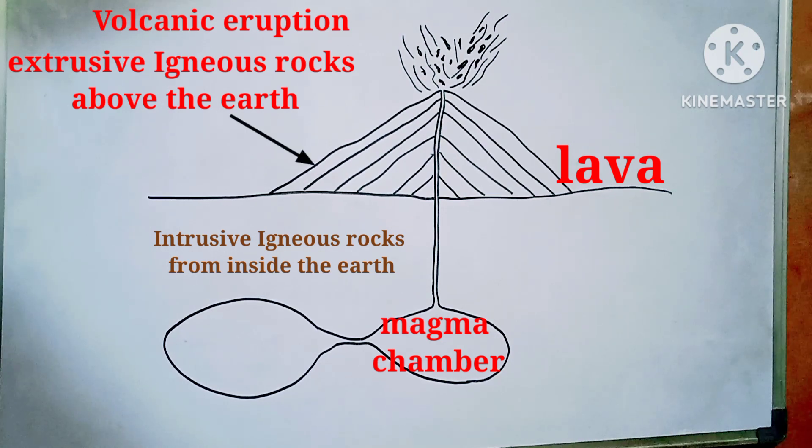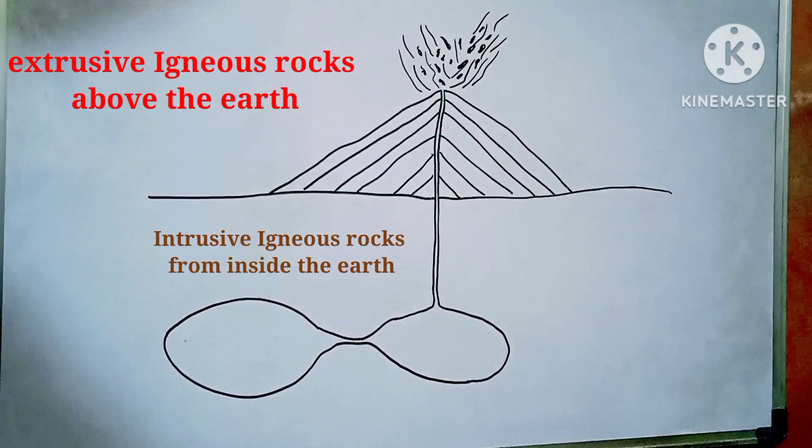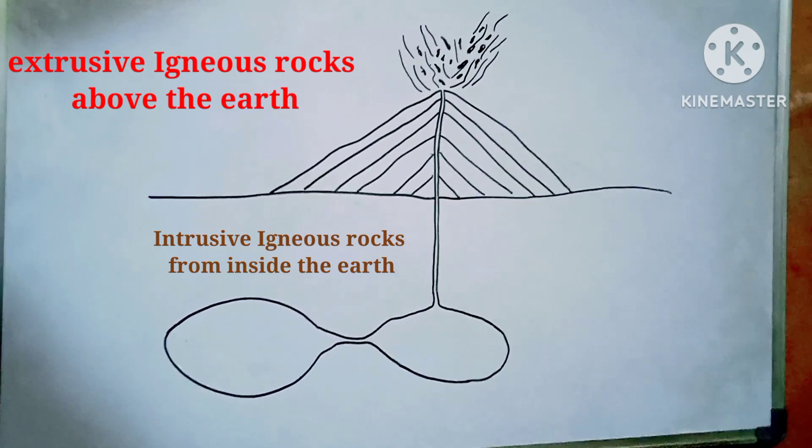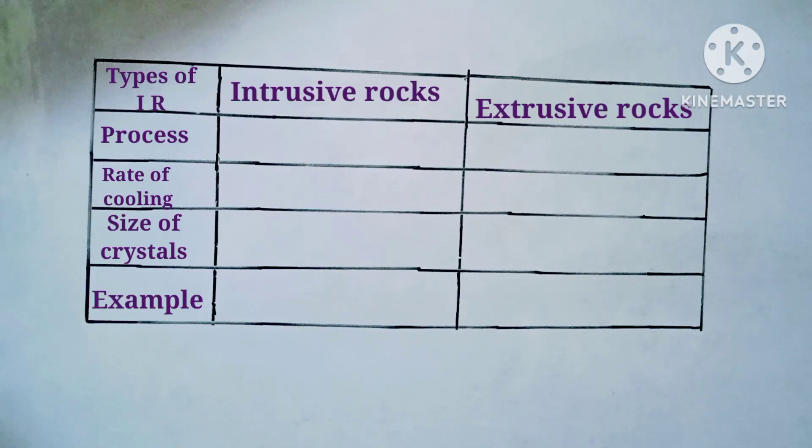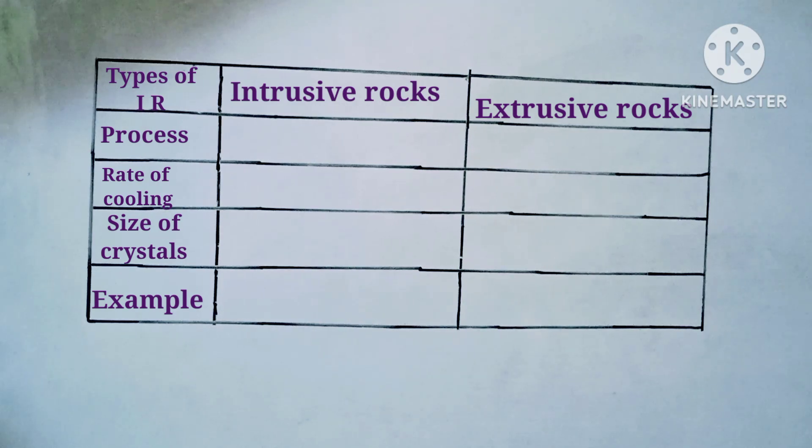These intrusive and extrusive rocks have different properties due to their different rates of cooling and the pressure under which they are formed. These igneous rocks are the oldest rocks on the earth's surface. Here I have drawn a table of the two types of igneous rocks comparing their different properties.